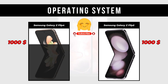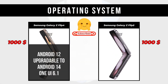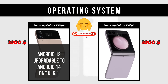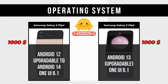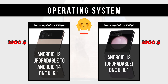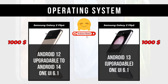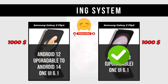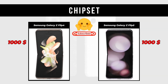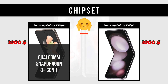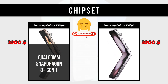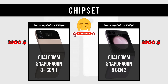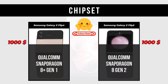Operating System: Samsung Galaxy Z Flip 4 is Android 12, upgradable to Android 14 with One UI 6.1; Samsung Galaxy Z Flip 5 is Android 13, upgradable to One UI 6.1. Chipset: Samsung Galaxy Z Flip 4 is Qualcomm Snapdragon 8 Plus Gen 1; Samsung Galaxy Z Flip 5 is Qualcomm Snapdragon 8 Gen 2.